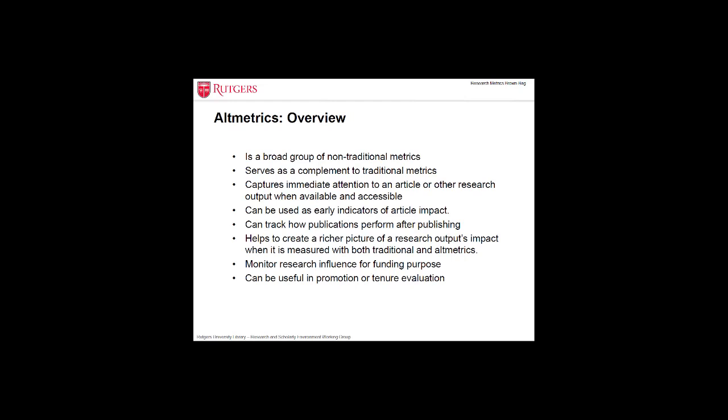Altmetrics are a group of non-traditional metrics and have been around for a decade. In 2008, the Journal of Medical Internet Research started collecting views and tweets. In 2009, PLOS launched the Article Level Metrics Project. However, at that time, they were not called altmetrics. It was not until September 2010 when Jason Priem coined the term altmetrics that people started to refer to them as altmetrics. Since then, there have been annual altmetrics conferences and other endeavors to advocate for altmetrics.